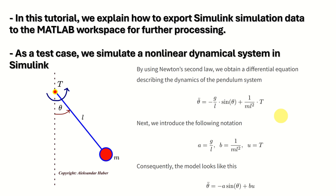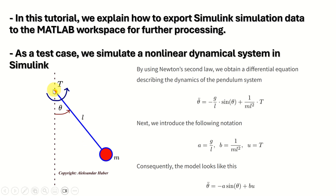As a test case we simulate a nonlinear dynamical system in Simulink. Here is our dynamical system — it is a pendulum system. The pendulum system consists of a rod to which we have attached a ball with a mass of M. The length of the rod is L, and theta is the angle of rotation of the rod. We assume there is a control torque T that acts on the rod and rotates the whole system. The pendulum is suspended at one point and can freely rotate around that point. By using Newton's second law we obtain a differential equation describing the dynamics of the pendulum system.